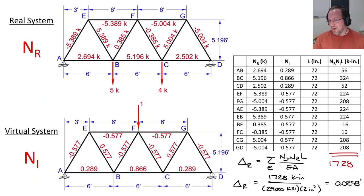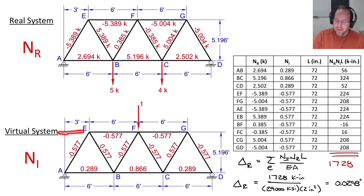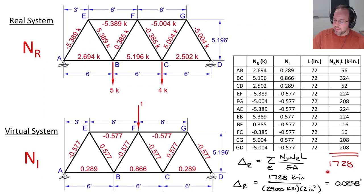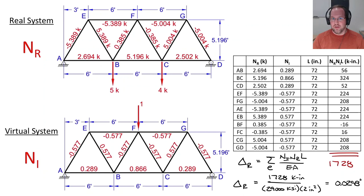That was quite a bit of work to find displacement at one location, but the method is repetitive for other locations. For example, to find the horizontal displacement at location E going to the left, simply place a unit load there and recalculate Nᵢ — the real system Nᵣ stays the same. Recompute the summation to find the new displacement. You can repeat this for any location of interest. That wraps up using the principle of virtual work for trusses — I hope you learned something, please subscribe and I'll see you next time.